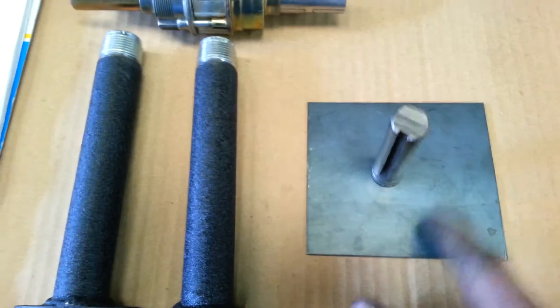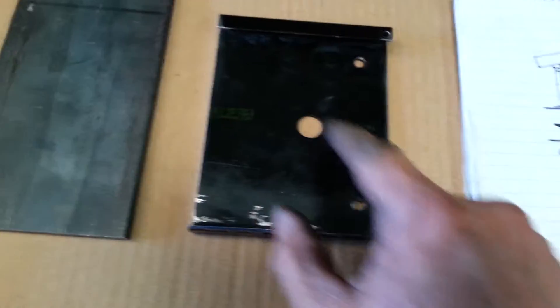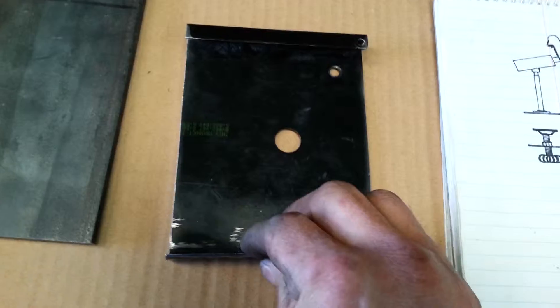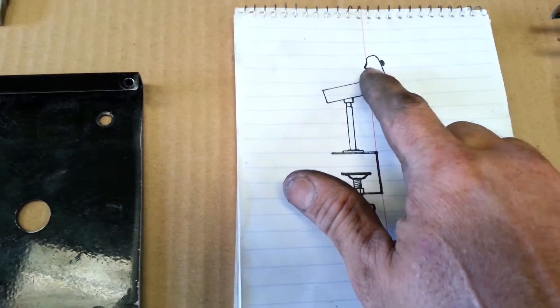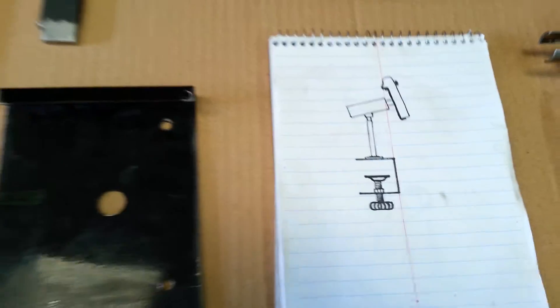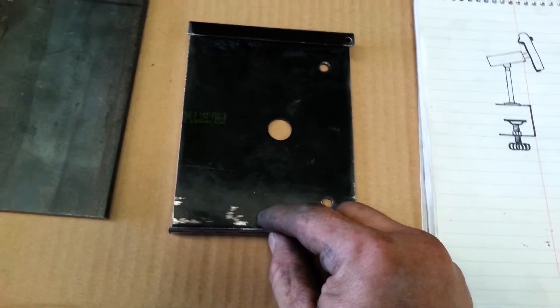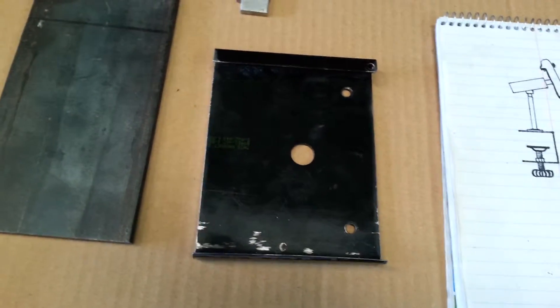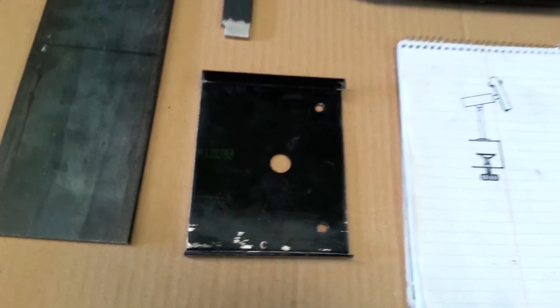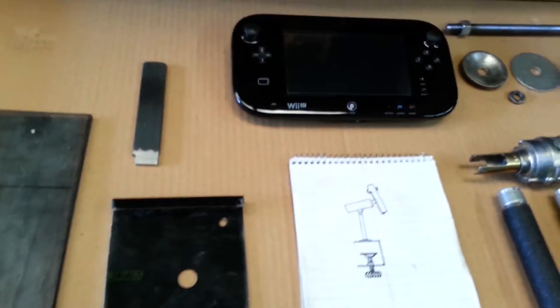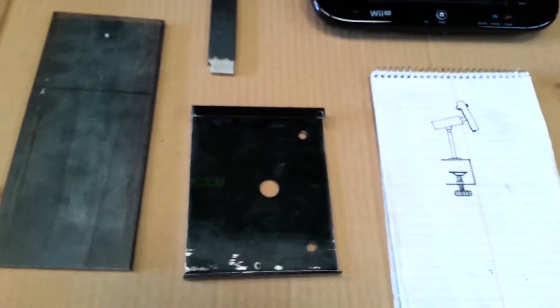And I'm going to weld it to this plate. This plate will be welded to this plate, which will be on the back of the gamepad. Now that's going to take a lot more time because I'm going to have to hammer it into shape to get the contour of the Wii gamepad. It's not flat on the back, it's curved. So I've got to get that worked out.